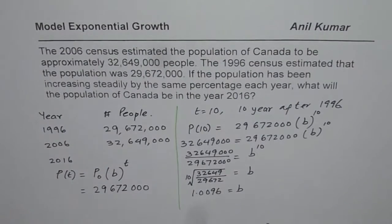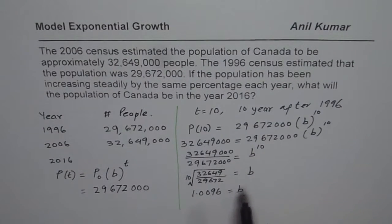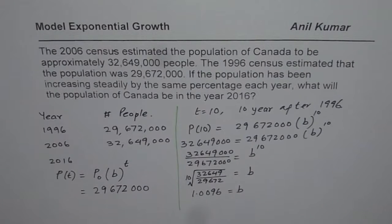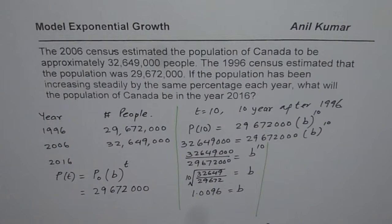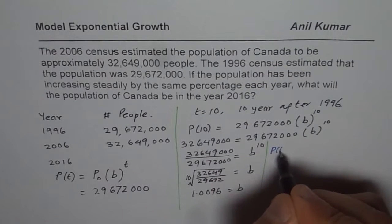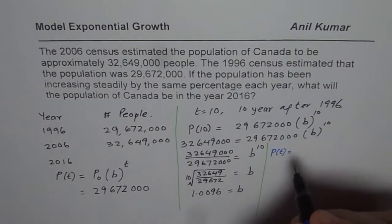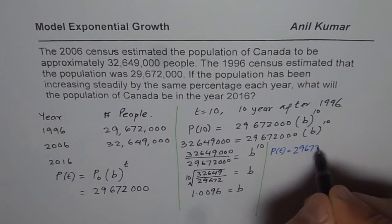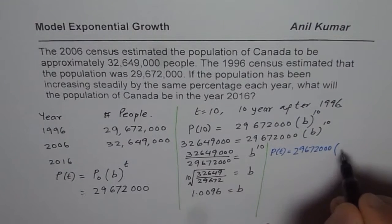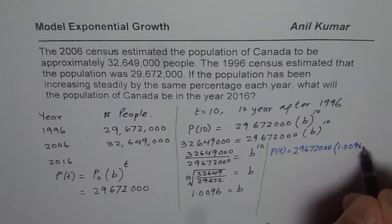So we found the percentage rate of growth per year. Now we have our formula ready and can use it to estimate population for any year. The complete formula is: P(t) = 29,672,000 × 1.0096 to the power of t.